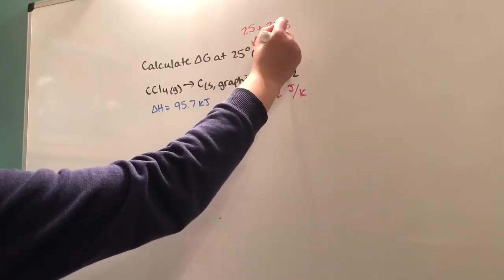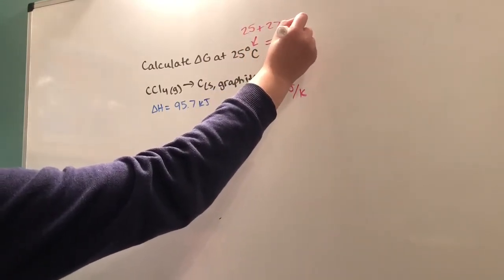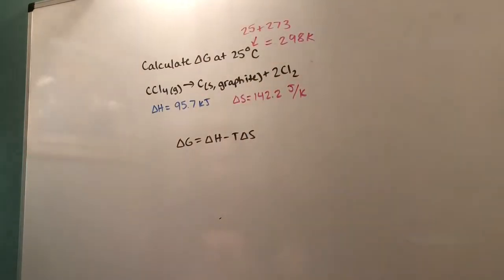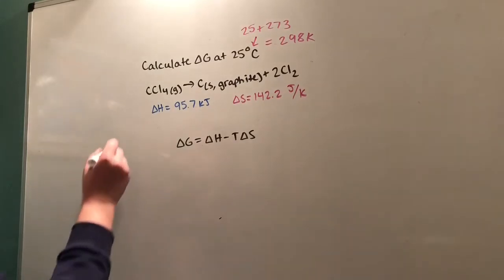The next thing we're going to do is make sure that ΔH and ΔS are either both in kilojoules or both in joules. I'm going to take ΔH and convert it into joules.